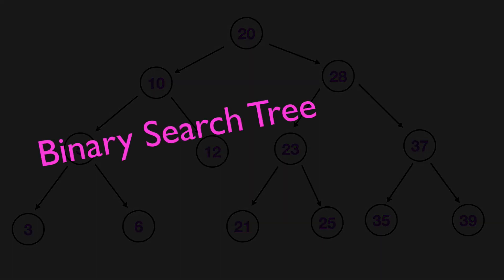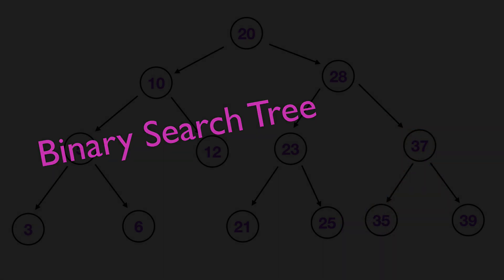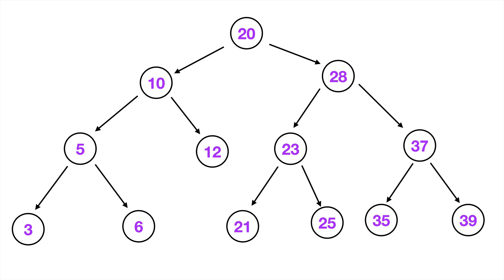In this video, we're going to talk about the idea of binary search trees, a very popular data structure that consists of various nodes in parent-child relationships. As you can see before you, this is a diagram of a binary search tree. At the very top, we have a node consisting of the number 20, and we would consider this to be the root node. This root node is going to be the basis of our tree.